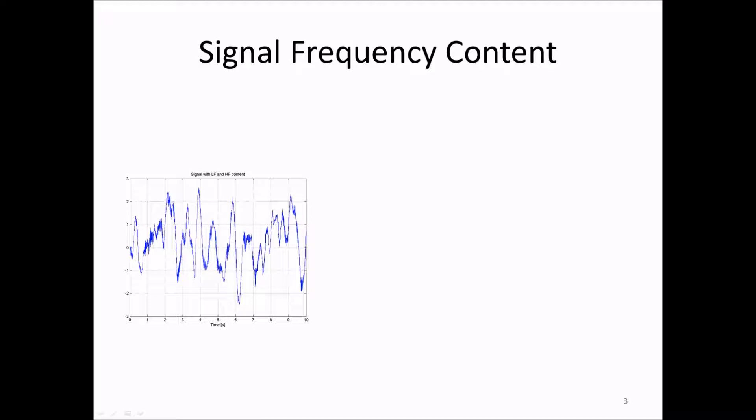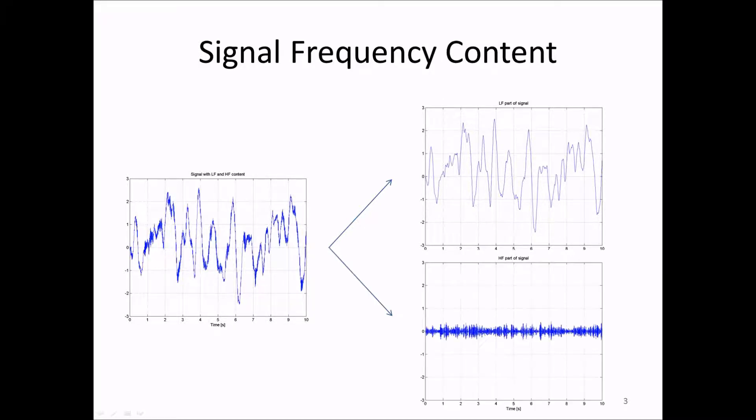If we remove the higher frequencies from this signal we obtain this. This is the low frequency part. And if we instead remove the lower frequencies of the signal we obtain this. You can think of any dynamic signal as a combination of signals with different frequencies. Analog and digital filters are techniques to essentially remove some frequencies from the signal.